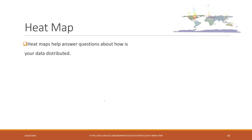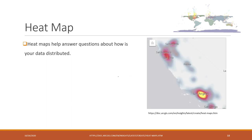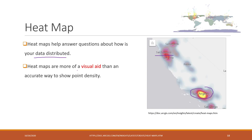A heat map has become very popular nowadays. A heat map basically tells you how your data is distributed spatially — for example, you can see there are more spatial entities in Los Angeles than in San Francisco. It can change dynamically when you zoom in or zoom out if it is an online map. However, a heat map is just a visual aid — there is no way to make accurate comparisons. It only helps you visually explore your data, but it is very hard to make accurate comparisons.